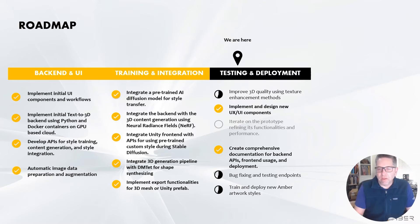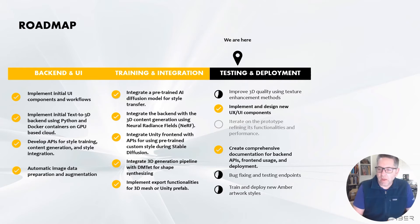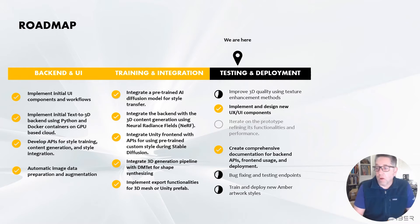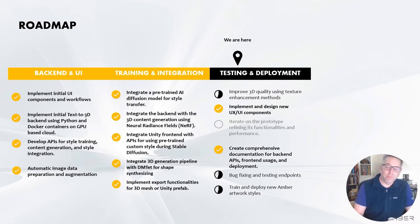Now that we have this basic version stood up, we're in testing and deployment and doing a lot of things to improve it — everything from UX and UI improvements, listening to our artists and developers at Amber so they can tell us what they want out of a tool like this, and improving the overall quality of not only the 2D but of course the 3D texture output. I'll show you some things that are the initial very beginnings, but it's very promising. While we're not at AAA quality yet, we anticipate being able to get there very soon.